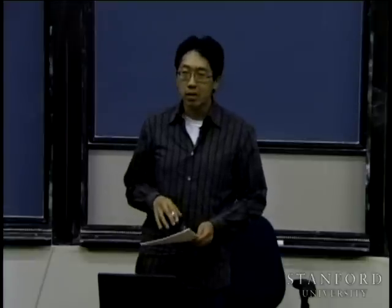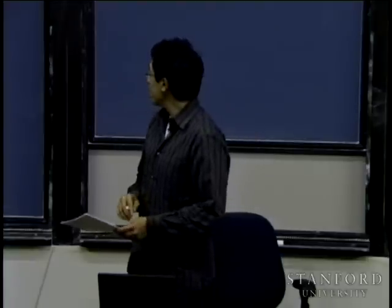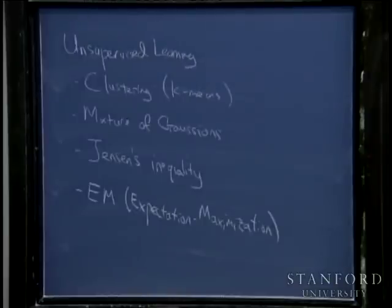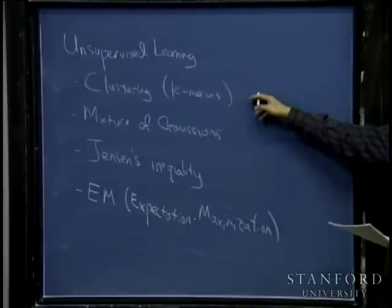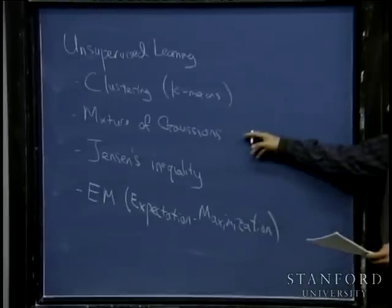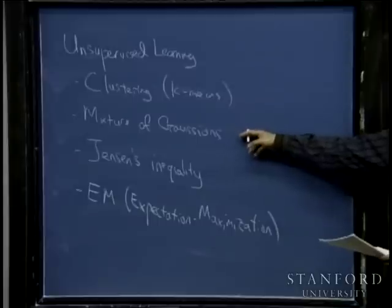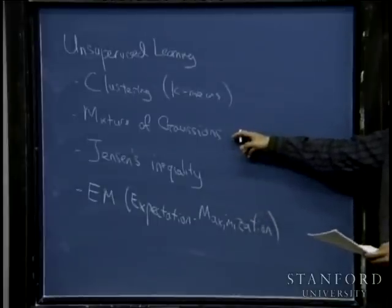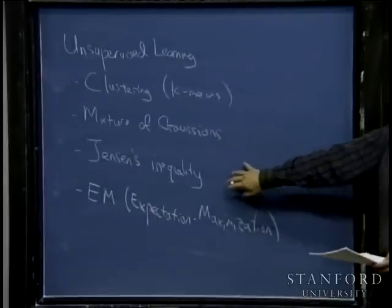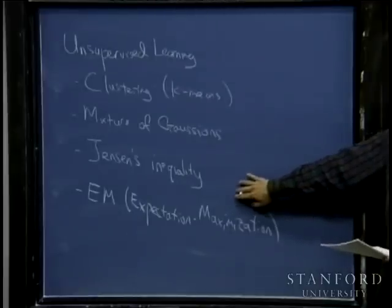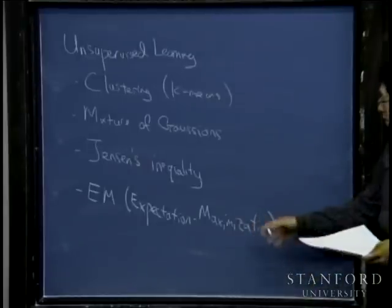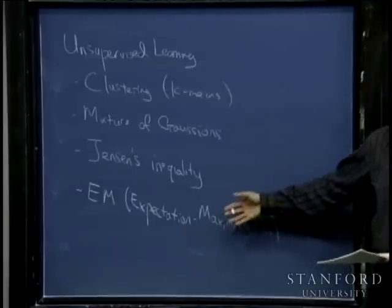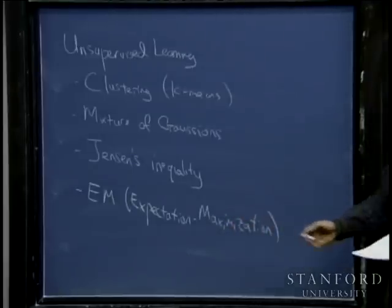Good morning and welcome back. Today I want to begin a new chapter in CS229, starting to talk about unsupervised learning. The brief outline for today: I'll talk about clustering and the k-means algorithm, the mixture of Gaussians model, the EM or expectation maximization algorithm for that model, Jensen's inequality, and then a general form of the EM algorithm, which is used widely across unsupervised machine learning applications.